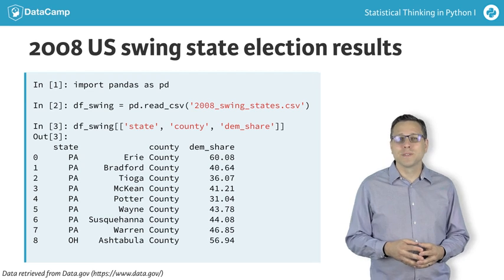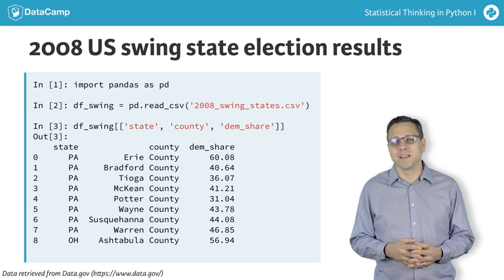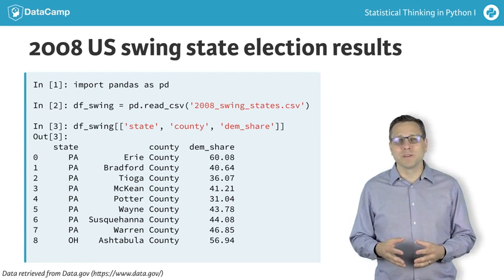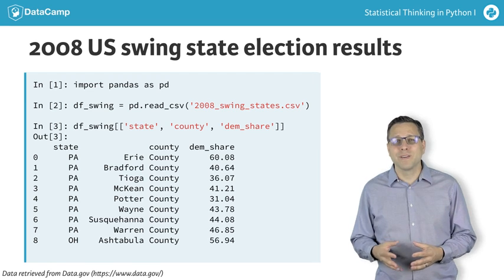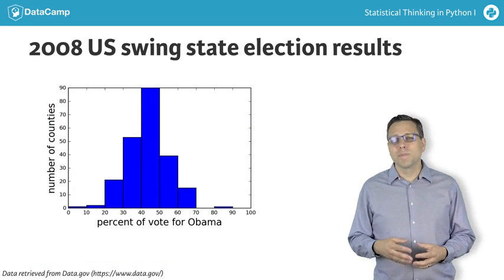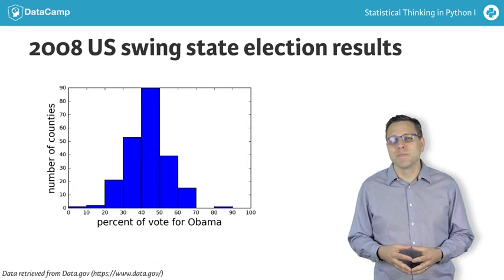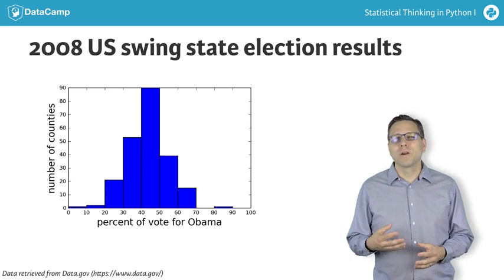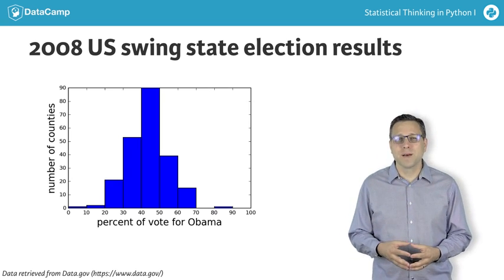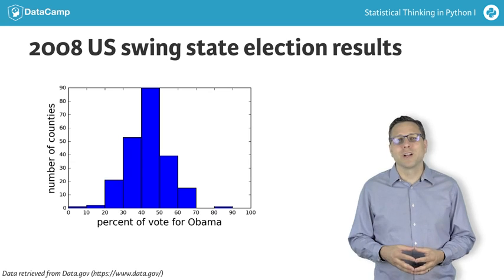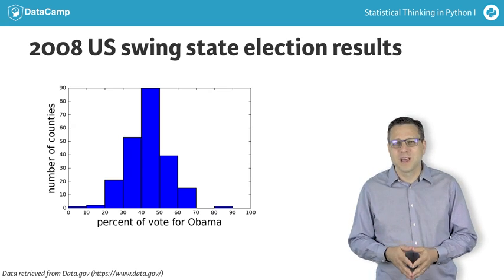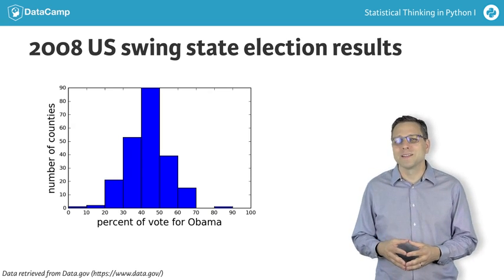In this chapter, we will discuss graphical exploratory data analysis. This involves taking data from tabular form, like we have here in the data frame, and representing it graphically. You are presenting the same information, but in a more human-interpretable form. For example, we take the Democratic share of the vote in the counties of all three swing states and plot them as a histogram.